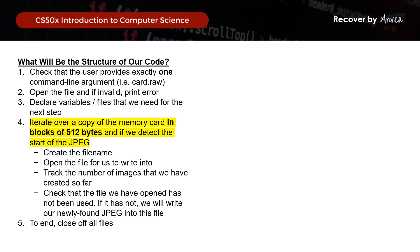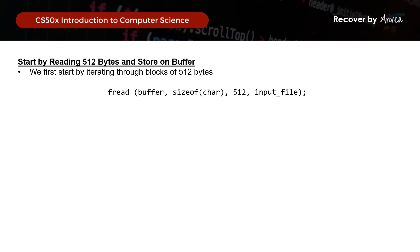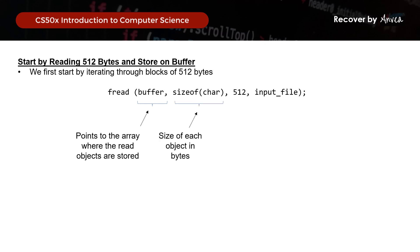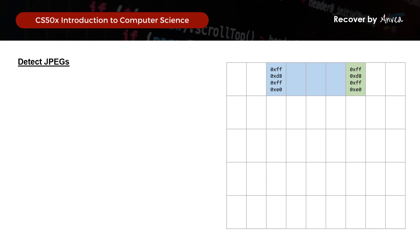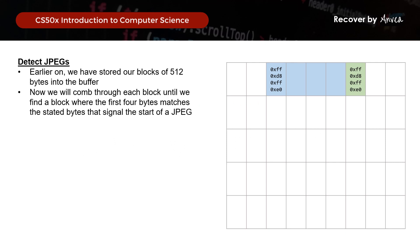Next, we need to iterate over a copy of the memory card in blocks of 512 bytes. We start by reading the file using fread. Here, buffer points to the array where objects are stored — the 512-byte buffer declared earlier. sizeof(char) represents the size of each object in bytes, 512 refers to the number of objects to read, and input_file is the source. Now that we have the bytes in blocks of 512, we can comb through each block to find one where the first four bytes match the JPEG signature.